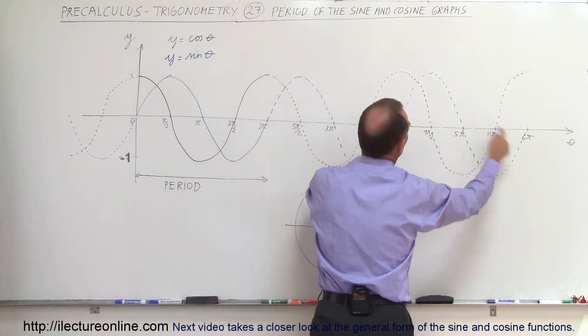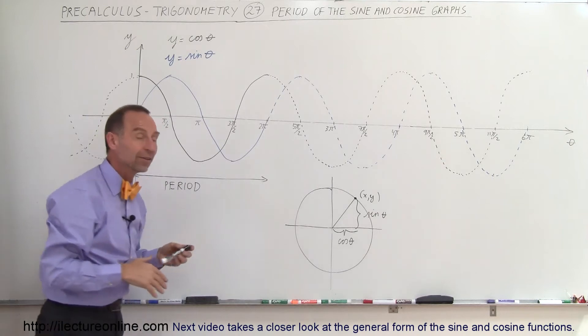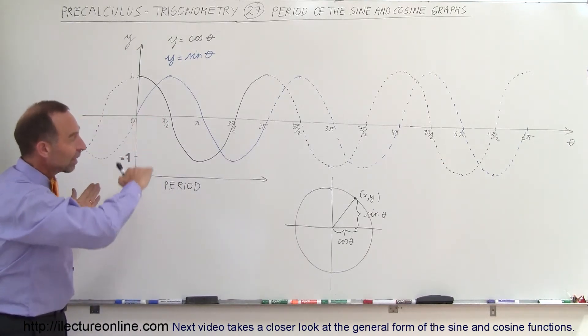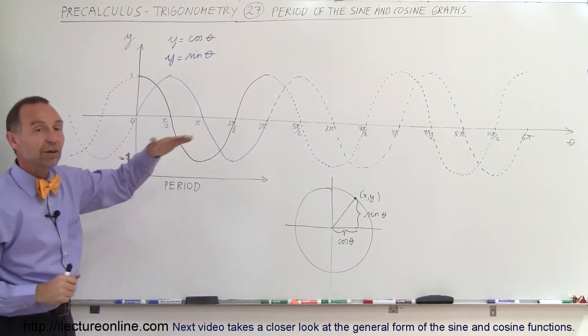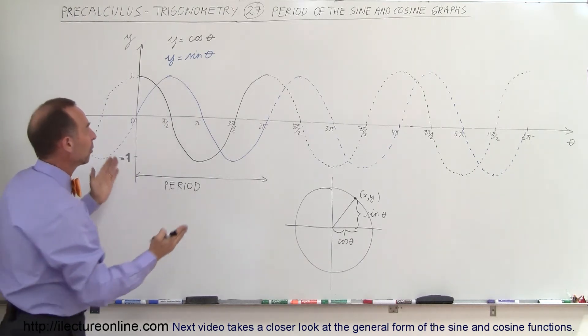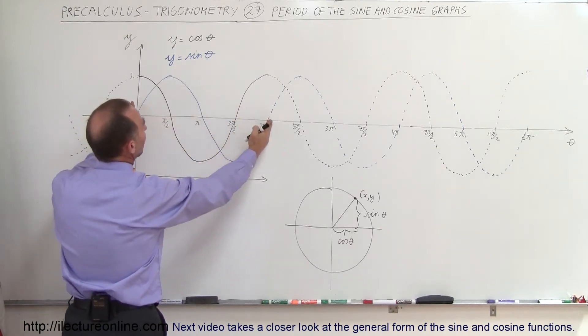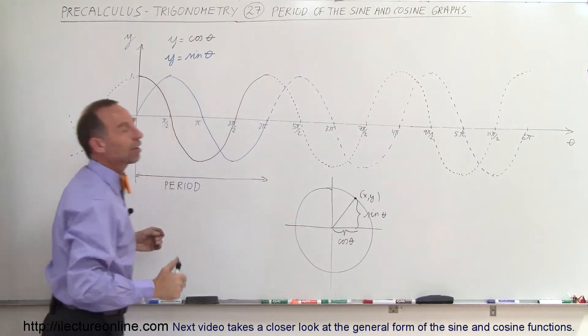We go another 2 pi, the whole function is repeated, be it the cosine of the angle or the sine of the angle. We see that periodicity, that repetition, and it goes on forever. Typically when we talk about the cosine or the sine we talk about the function from 0 to 2 pi, but you can see how it just continues on forever.